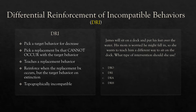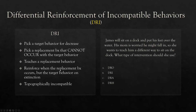Let's keep it simple. Pick a behavior that cannot occur with the target behavior. Most common example: target behavior for decrease is standing up out of your chair. What is the replacement behavior that cannot occur with standing up? Sitting down. We have our target behavior for decrease, which we are putting on extinction, and we're reinforcing sitting down. Sitting down is incompatible. DRI does teach a replacement behavior — you're going to reinforce when the replacement behavior occurs and put the target behavior on extinction.